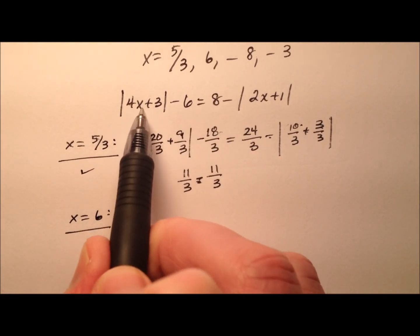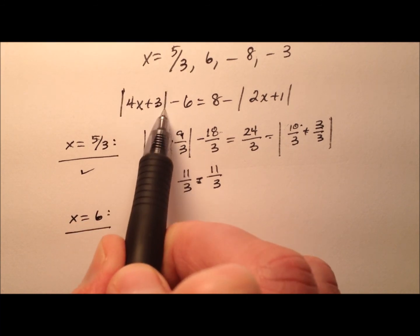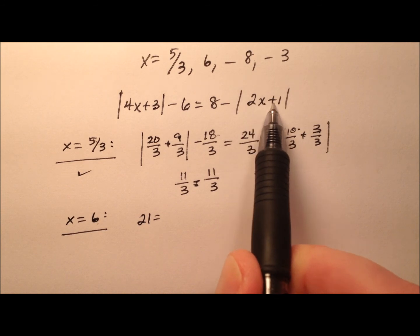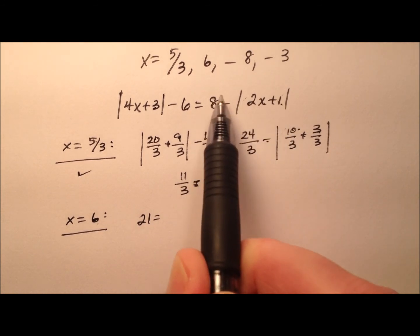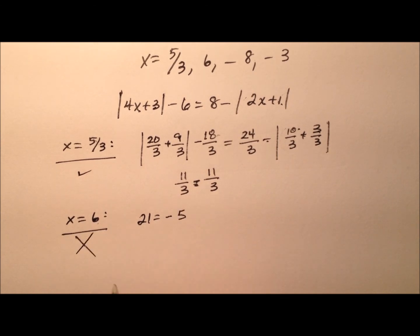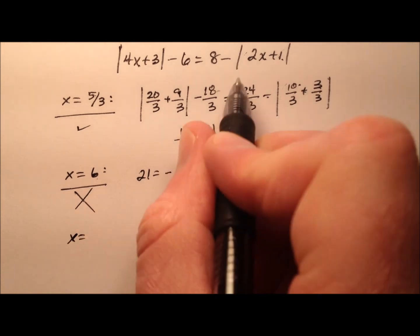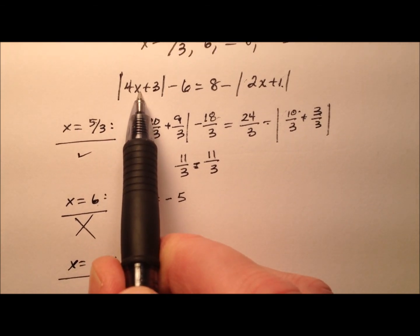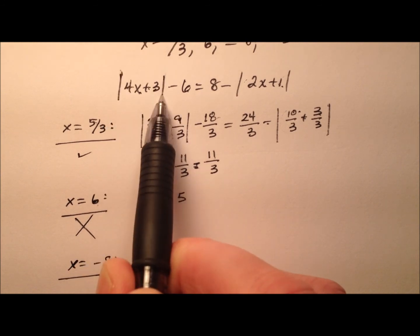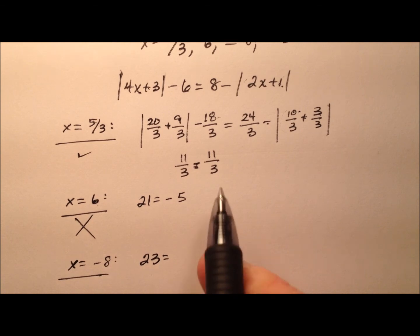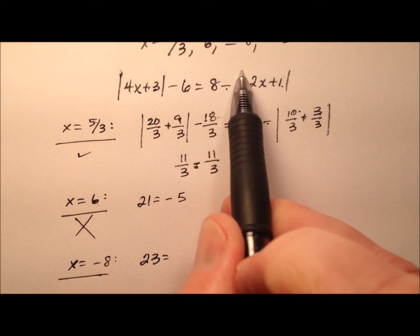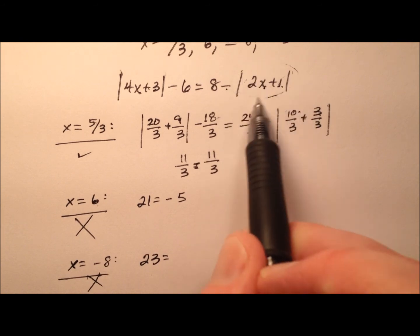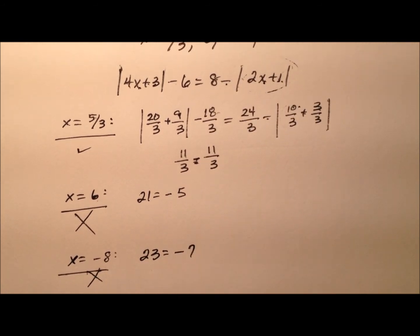Checking x equals 6: 4 times 6 is 24, plus 3 is 27, absolute value 27 minus 6 is 21 on the left. On the right: 2 times 6 is 12, plus 1 is 13, so 8 minus 13 is negative 5. That's a no-go. Checking x equals negative 8: 4 times negative 8 is negative 32, plus 3 is negative 29, absolute value 29 minus 6 is 23 on the left. On the right: 2 times negative 8 is negative 16, plus 1 is negative 15, absolute value 15, and 8 minus 15 is negative 7. That one fails too.